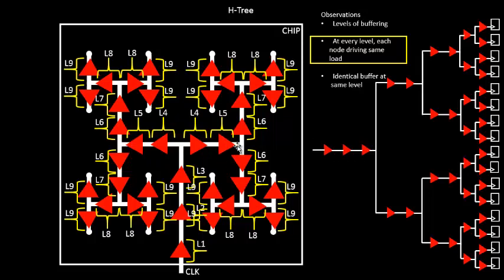So over here, if you see, the clock buffer is driving a net and the input cap of this particular buffer. Similarly, over here also, this particular buffer is driving this particular net and the input cap of this buffer.